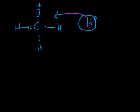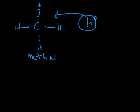Carbon has four electrons in its outermost orbit — that is why we use the term tetravalency. Regarding nomenclature, when there is only one carbon, the name is methane, and it has a single bond. We will cover the nomenclature in the next video. This is how methane is formed, and this is your tetravalency.